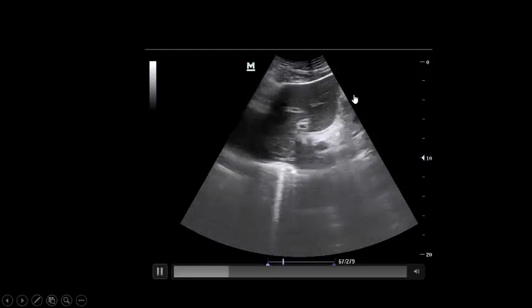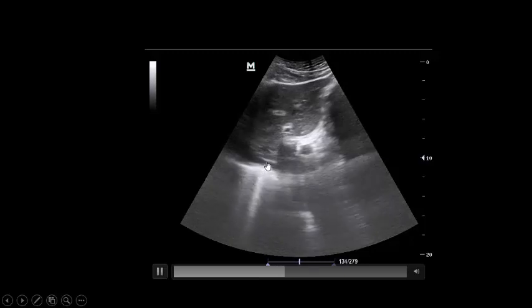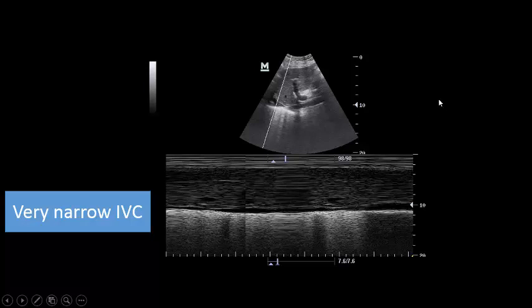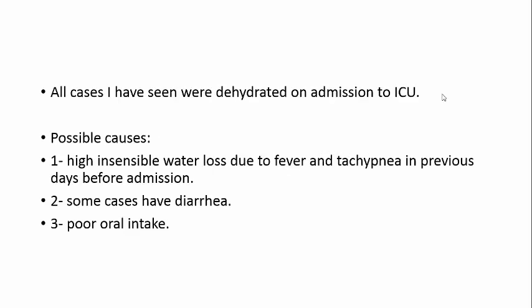First, inferior vena cava. As you see here, the patient's IVC is very narrow and totally collapsing. Attention: all cases I have seen were dehydrated on admission to ICU. Possible causes include high insensible water loss due to fever and tachypnea in previous days, some cases have diarrhea, and poor oral intake. Almost all patients I've seen on admission to ICU were significantly dehydrated, and I believe this is a main factor for acute renal failure.